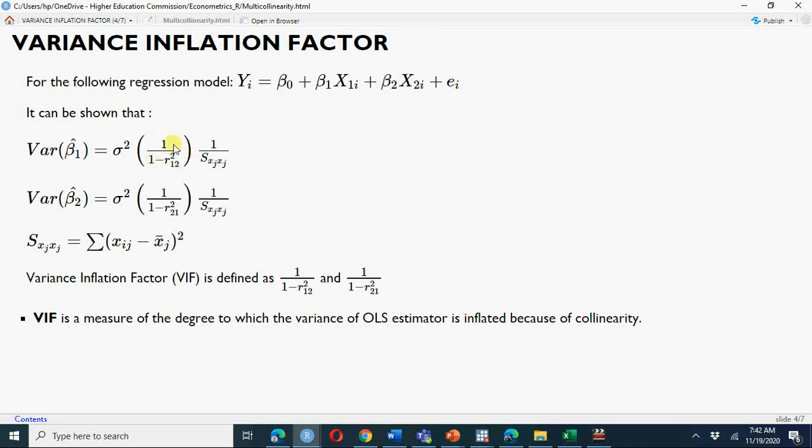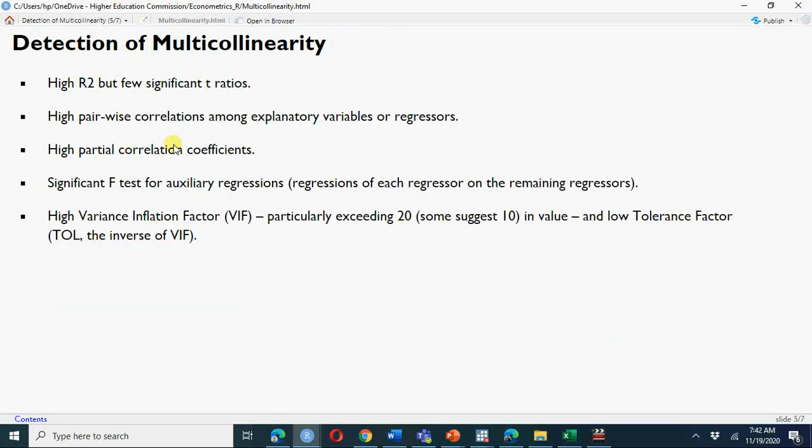How do we detect that there is multicollinearity? You see high R square, very few significant t ratios, pairwise correlations are very high, and if variance inflation factor, as per Greene's econometric analysis, is greater than 20,